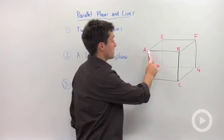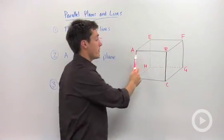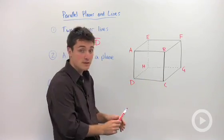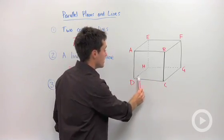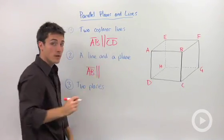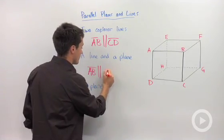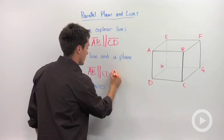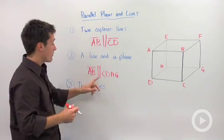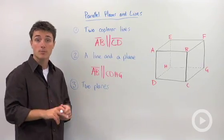It also intersects this plane ABEF, which means it could be parallel to this bottom face. So the bottom face is CDHG. So we could say that line segment AB is parallel to plane CDHG. So that line will never intersect that plane. They're considered parallel.